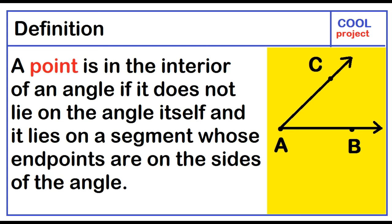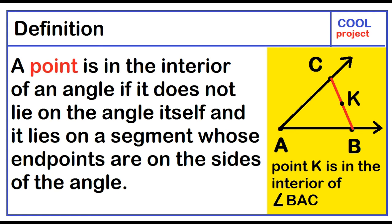A point is in the interior of an angle if it does not lie on the angle itself, and it lies on a segment whose endpoints are on the sides of the angle. Point K is in the interior of angle BAC.